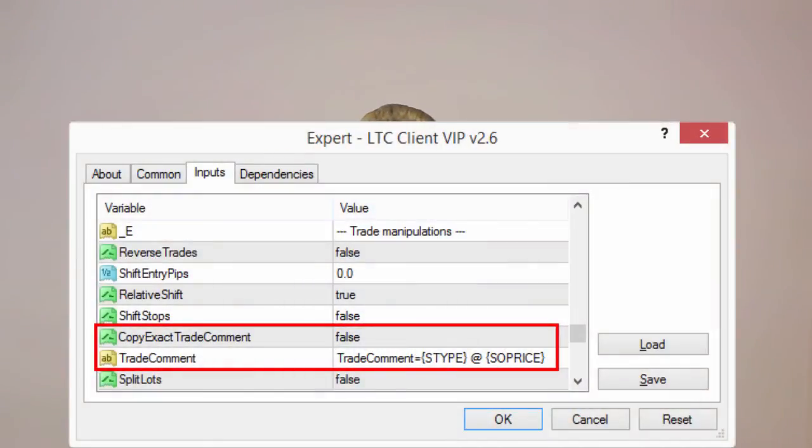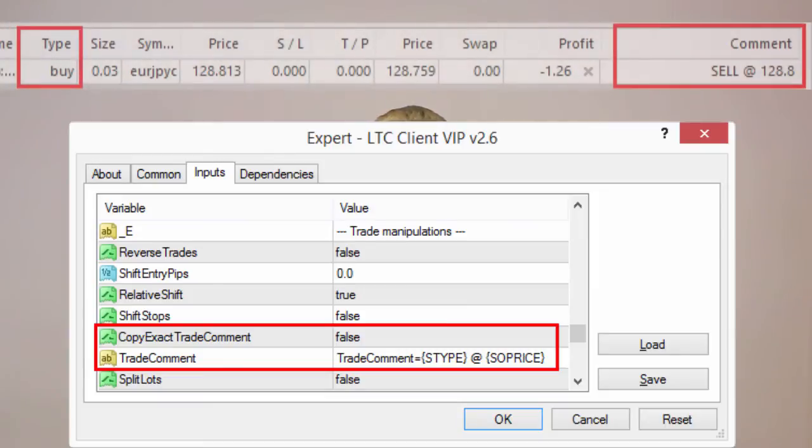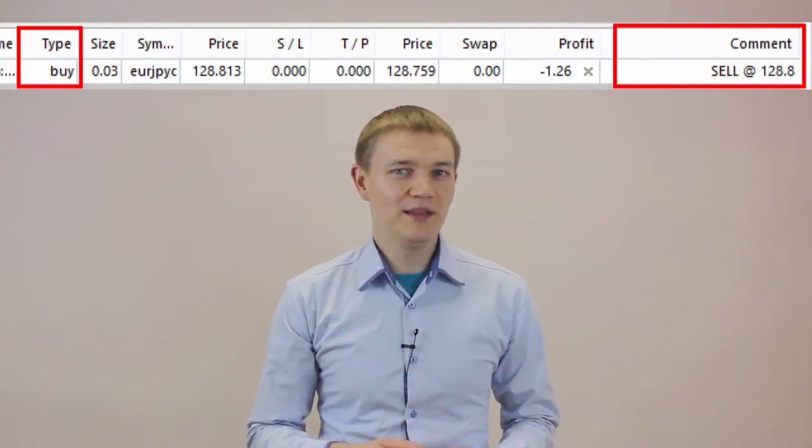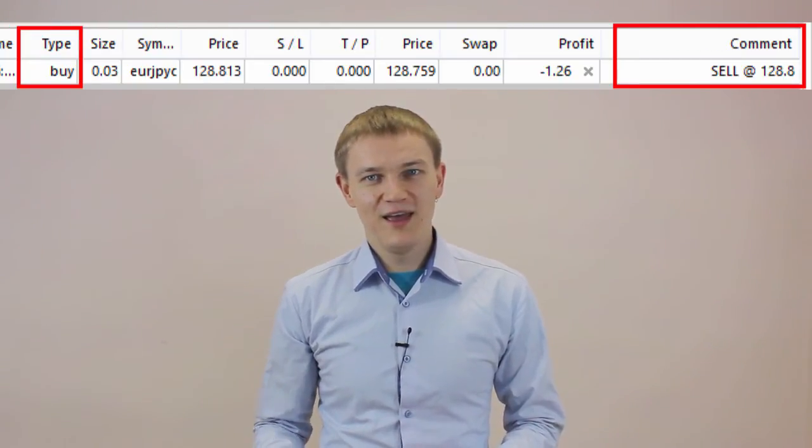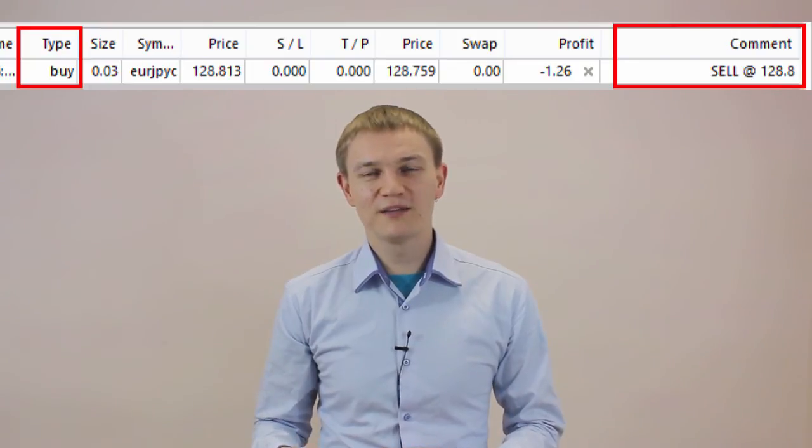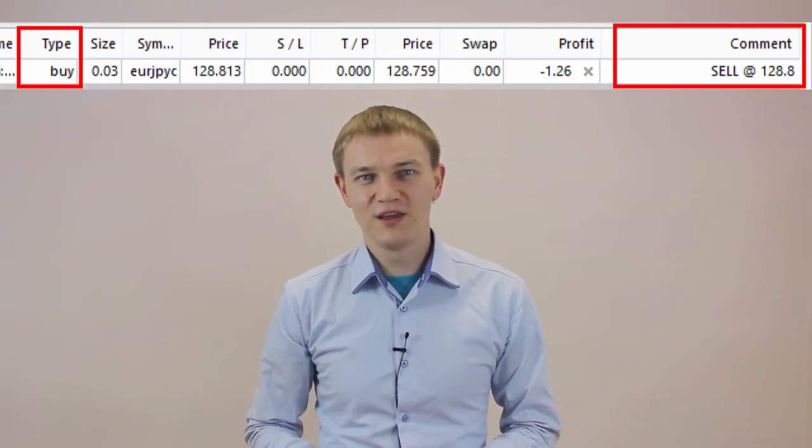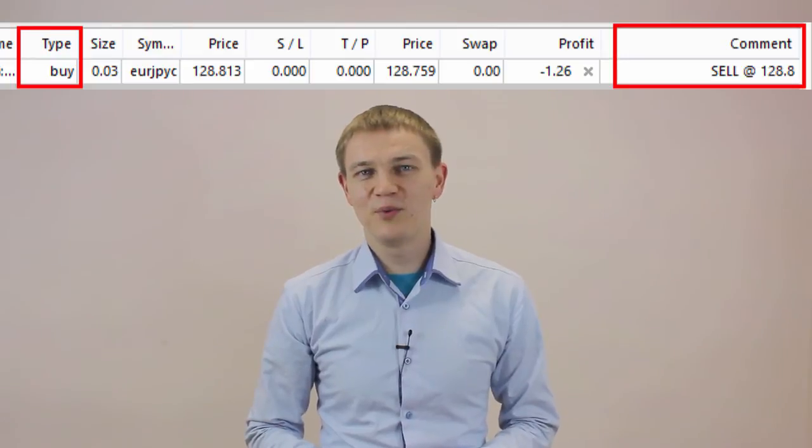In example number two, let's set the client EA like this. This would produce the following trade comment on the client side. Such trade comment is quite useful in reverse trading mode. In our example the reverse trade would be buy while in the trade comments it shows that the trade type on the server side is sell. Also it adds open price from the server side trade which helps you easily compare it with the open price of the client side trade.